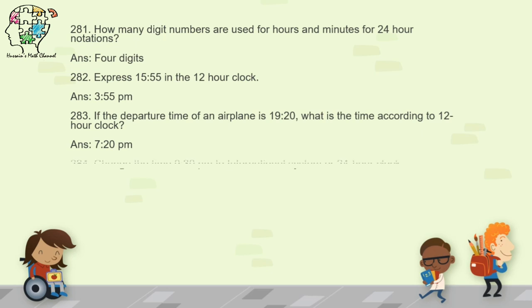Question 284: change 9:30 PM to the 24-hour international clock system. To convert to 24-hour clock, add 12 to the given time and remove PM. The answer is 21:30. In 24-hour clock notation, we do not use AM or PM.